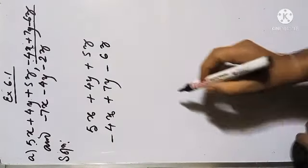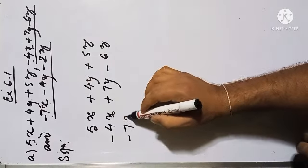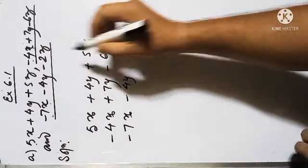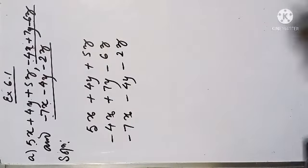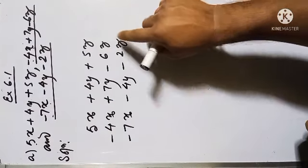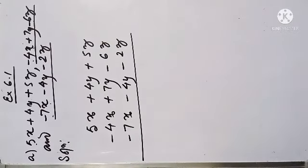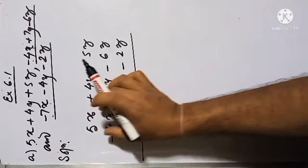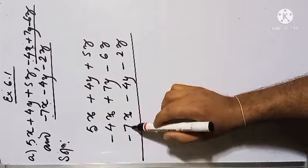At the last we have minus 7x, so let me write minus 7x, then minus 4y, then minus 2z. We are trying to keep x, x, x together, y, y, y together, and z, z, z together. Now we are going to add. These are all having x to the power 1 — that means these three terms are like terms: 5x, minus 4x, minus 7x.